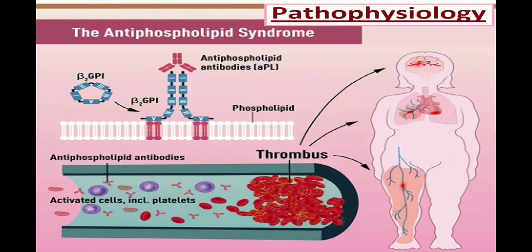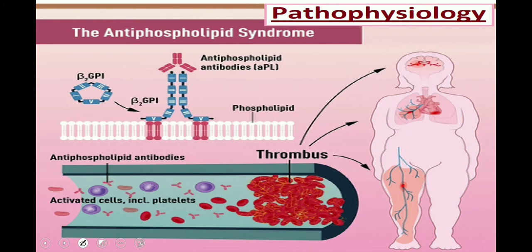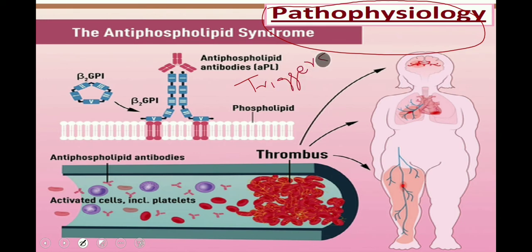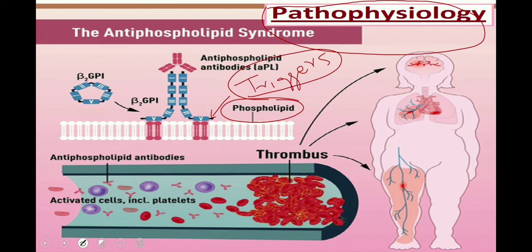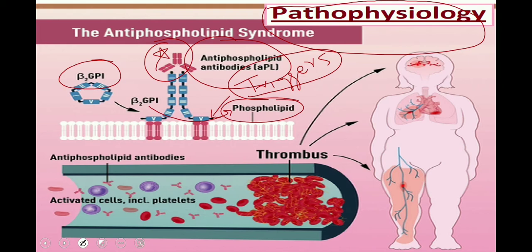Let us discuss in detail the pathophysiology of antiphospholipid syndrome. As a result of certain triggers like infection, oxidative stresses, and certain physical stresses, there is apoptosis of endothelial cells which exposes the phospholipid in the platelets and in the cell membranes. Beta-2 glycoprotein targets the phospholipid found in these cell membranes and platelets. Once they get bound, a phospholipid-protein complex is formed and a new epitope is uncovered, which subsequently becomes the target of autoantibodies, resulting in adhesion and aggregation of platelets and ultimately clot formation.